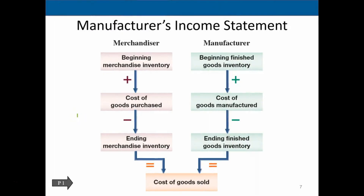Now the manufacturer's income statement. We focus on what is different, being inventory. The income statement is income minus expenses, and our most important expense is the cost of the stuff we're selling. Income minus cost of goods sold gives us gross profit, then we subtract the rest to get net income. To calculate cost of goods sold for a merchandiser: beginning merchandise inventory plus cost of merchandise purchased gives goods available, minus ending inventory gives cost of goods sold.